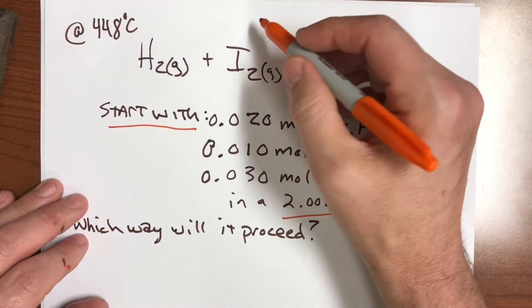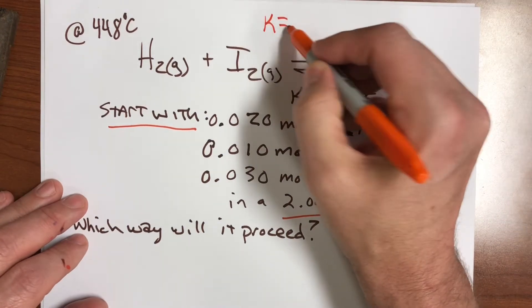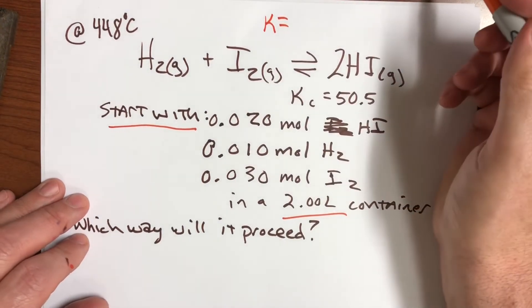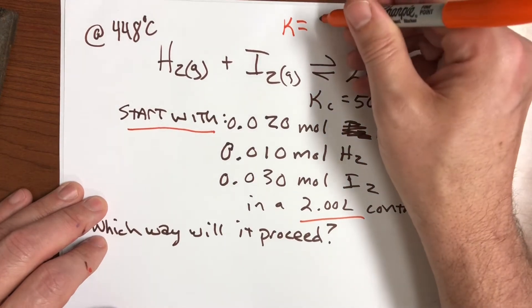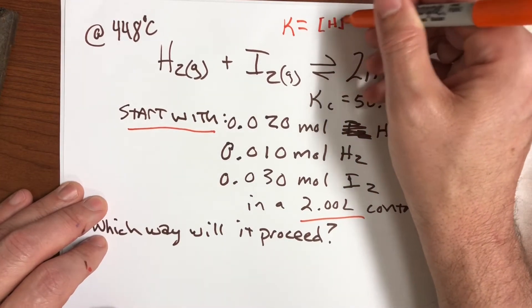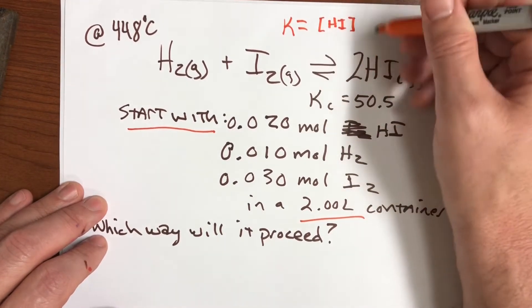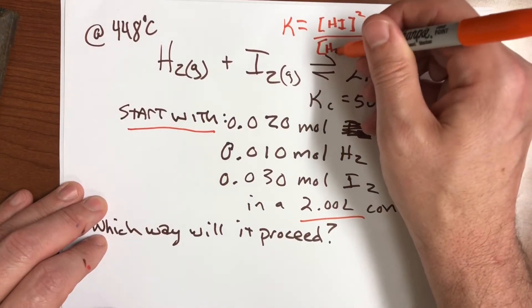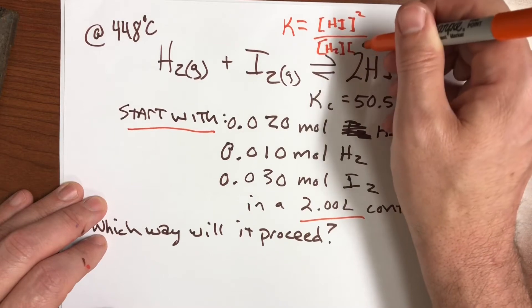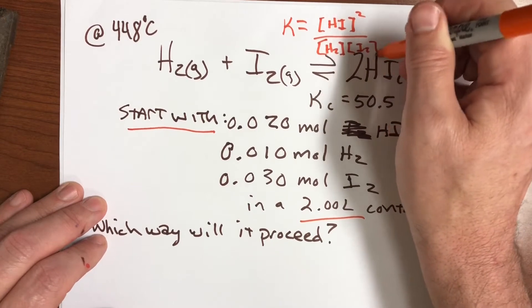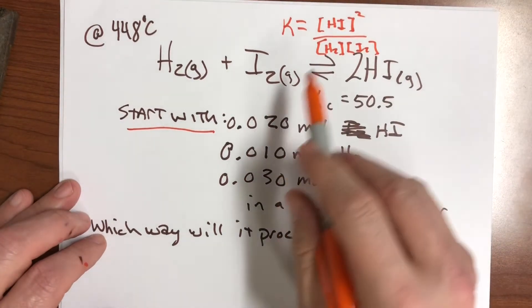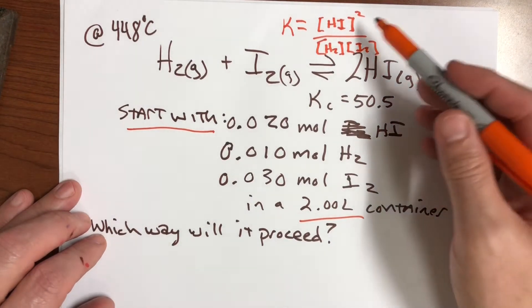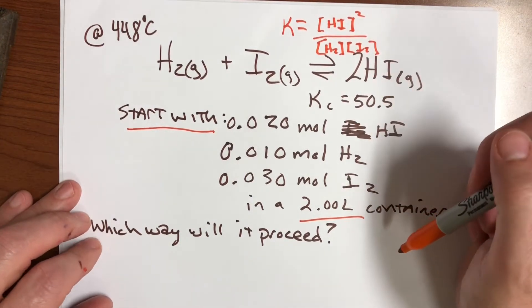So let's figure out what Q is going to be with this situation. Let's start out with a Q or K expression. We know that it's going to be HI, product side first on top, and that's going to be squared. We're going to divide that by H2, and we're also going to divide it by I2. So there is our K expression. All we need is numbers for each of these things, and then we can plug them in.